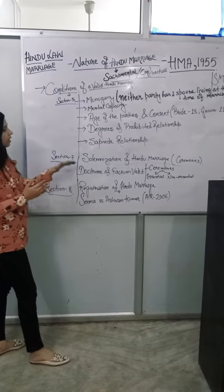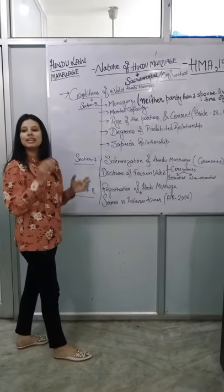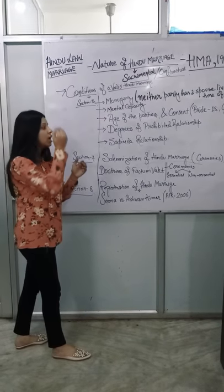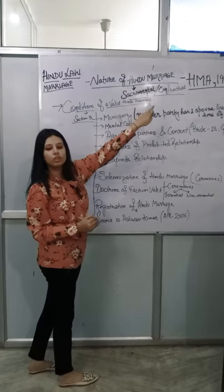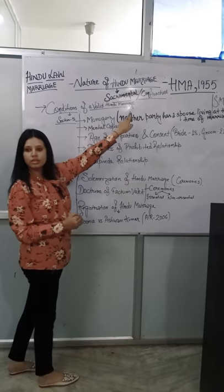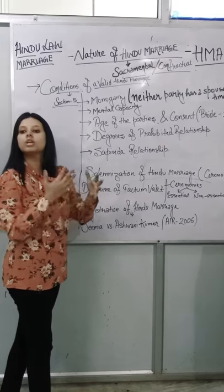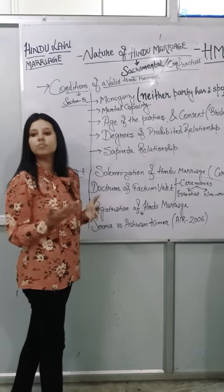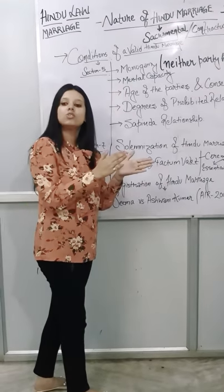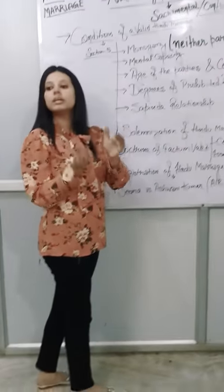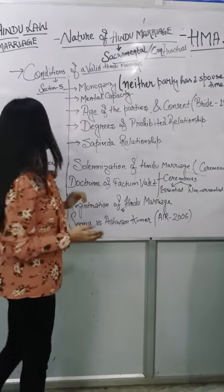Under Section 7, there is the solemnization of Hindu marriage — the ceremonies under Hindu marriage — and that leads to the question: what is the nature of Hindu marriage? It is sacramental in nature because in Hindu marriage we follow some rituals. There are different ceremonies; there is the sacred fire, and we take 7 steps around the sacred fire. These rituals make Hindu marriage sacramental in nature rather than contractual.